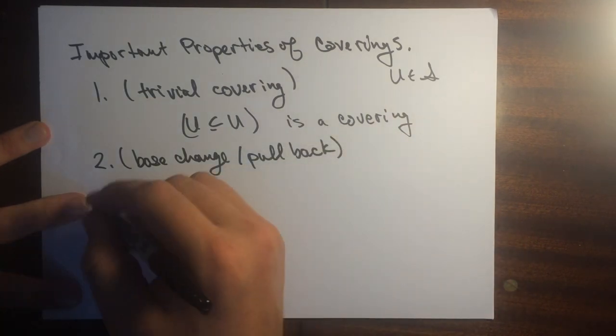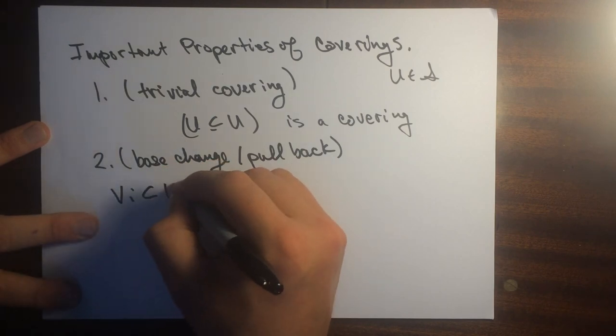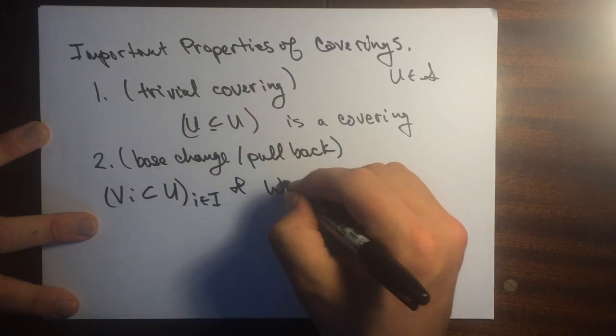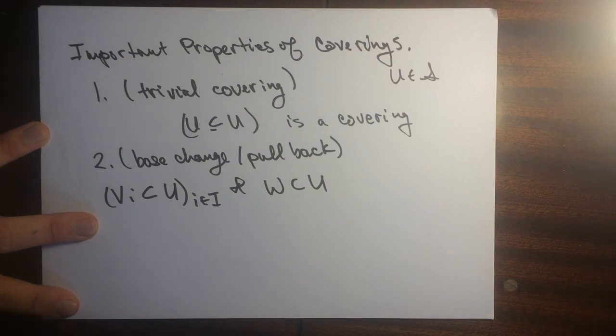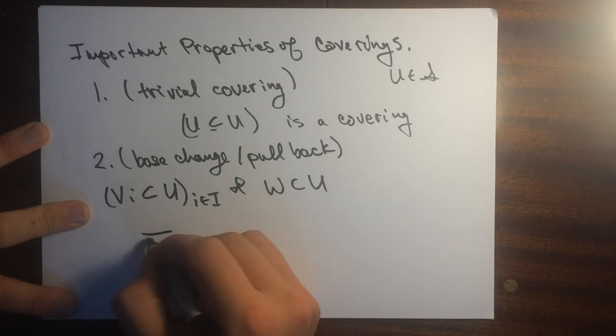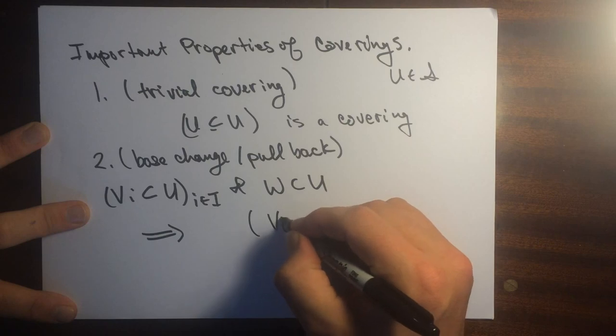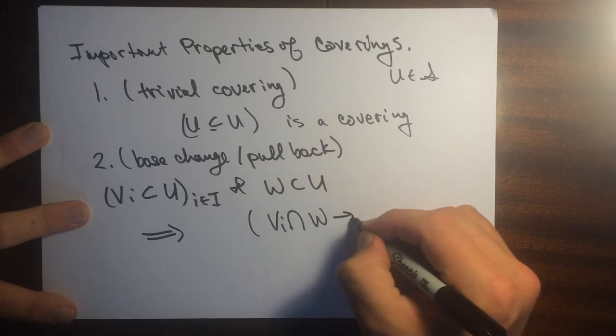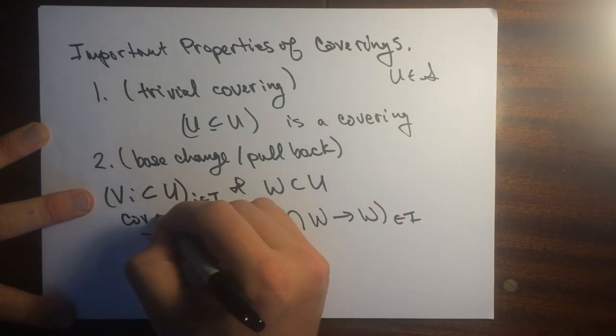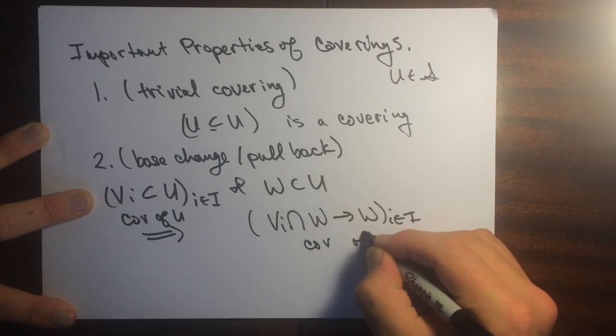There's this other base change property or pullback property. It says that if we're given a covering of this guy U, and if we're given another open subset of U, so we're given another open subset and W is contained in U. Then this will tell us that when we take Vi and we intersect it with W, that this is going to be a covering. So this is a covering of U, this is going to be a covering of W.